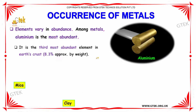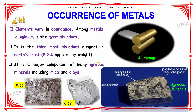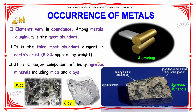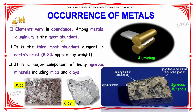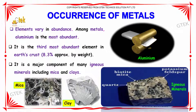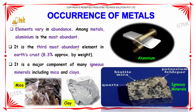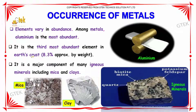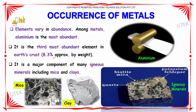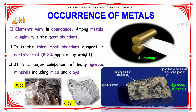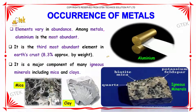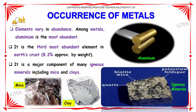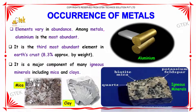Occurrence of metals: the elements vary in abundance. Among metals, aluminum is the most abundant. You can see the aluminum here — it is the third most abundant element in the earth's crust, at approximately 8.3 percent. It's a major component of many igneous minerals including mica and clays.